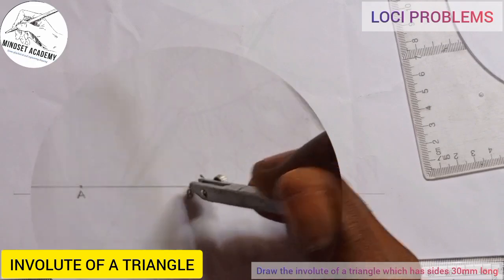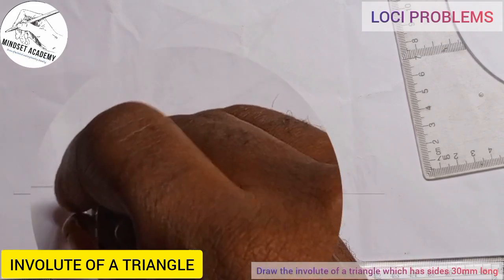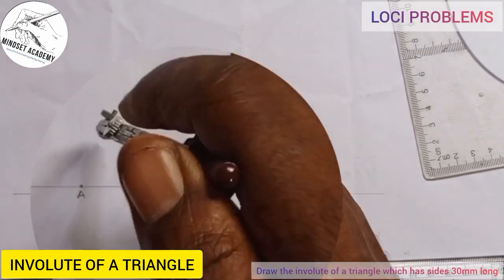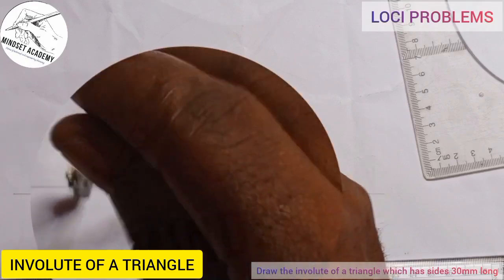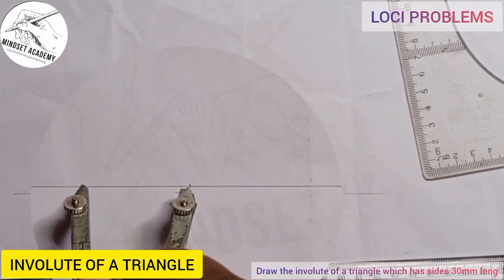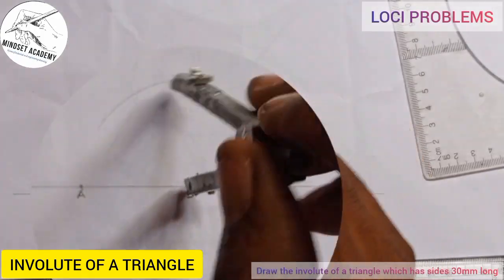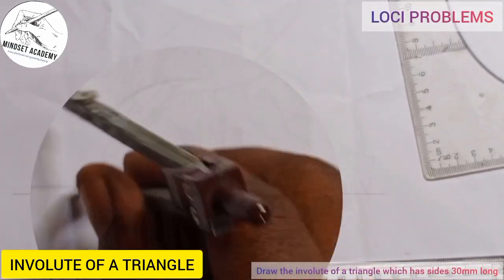I'm going to take the measurement, the radius of AB, and I'll strike an arc up. I'll come to A and also strike the same arc where both of them intersect to give you point C.